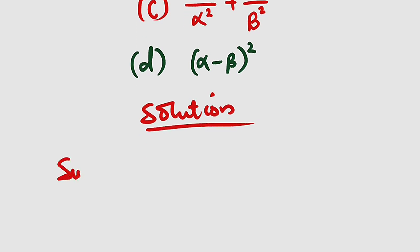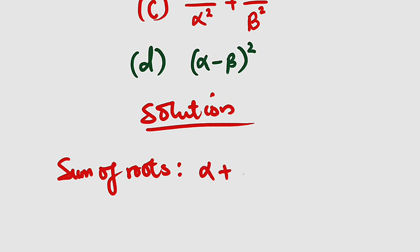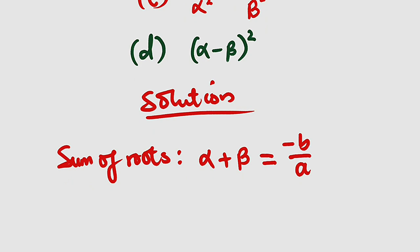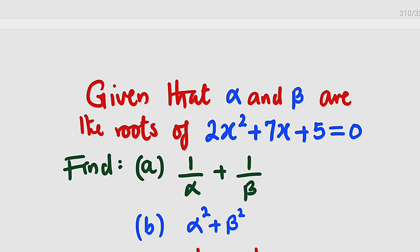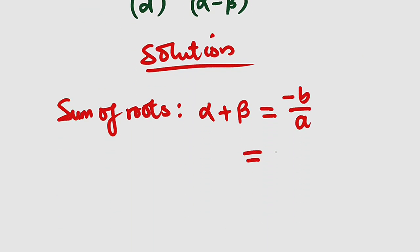The sum of roots means you add the two roots together: alpha plus beta. The sum of roots has its own formula which is minus b divided by a, where b is the coefficient of x and a is the leading coefficient. So since we have minus b divided by a, it is equivalent to minus 7 divided by 2. And hence, if you solve that quadratic equation and add the two roots together, you have to get minus 7 divided by 2.